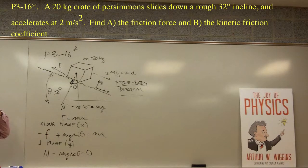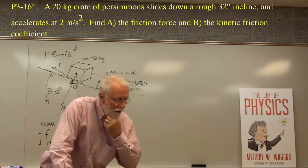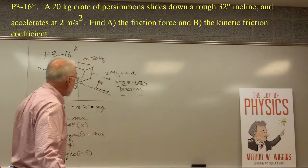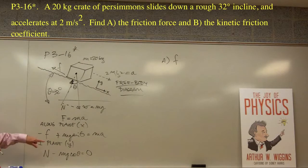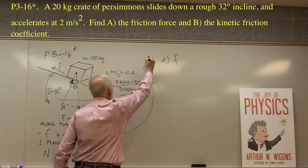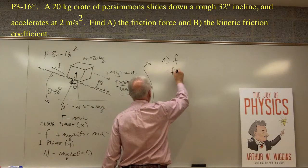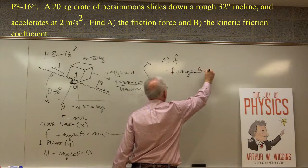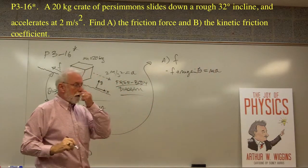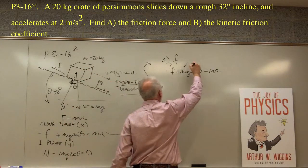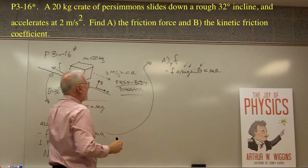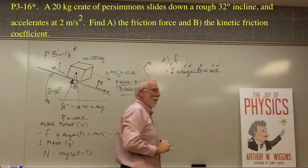Now we've applied our physics principles. We identify what's known and unknown. Part A asks us to find the friction force f. We already have an equation with f in it. Rewriting the x-direction equation: minus f plus mg sine theta equals ma. We know m is 20 kilograms, we know g, we know theta is 32 degrees, and we know a. One equation, one unknown — we're in good shape.